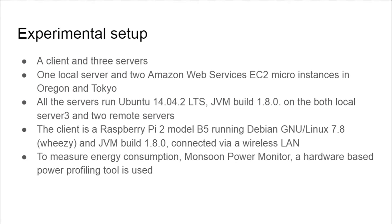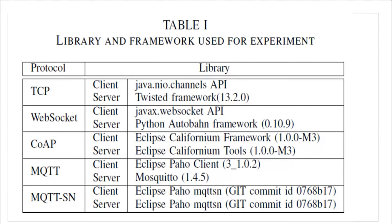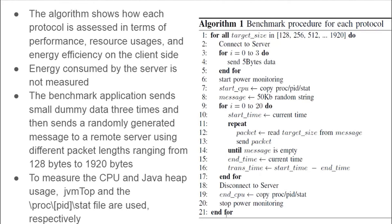The experimental setup consists of one client and three servers located at different physical locations: local, Oregon, and Tokyo. The provided table looks at the various protocols and the libraries which are used in the experiment. The algorithm shows how each protocol is assessed in terms of performance, resource usage, and energy efficiency on the client side. The benchmark application sends data to a remote server using different packet lengths, ranging from 128 bytes to 1920 bytes.